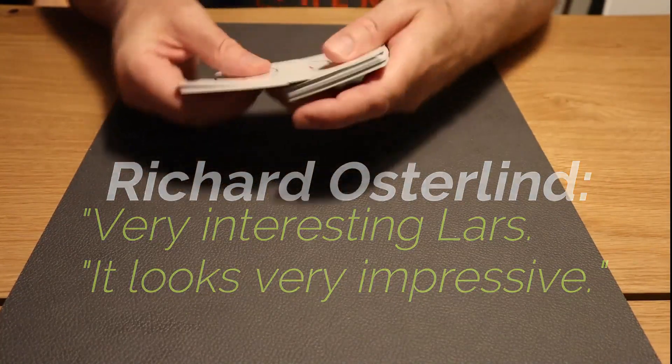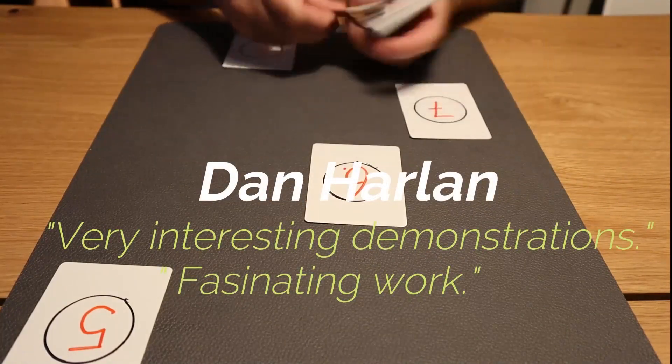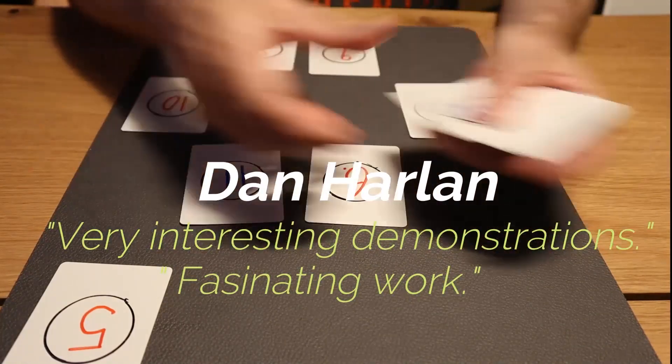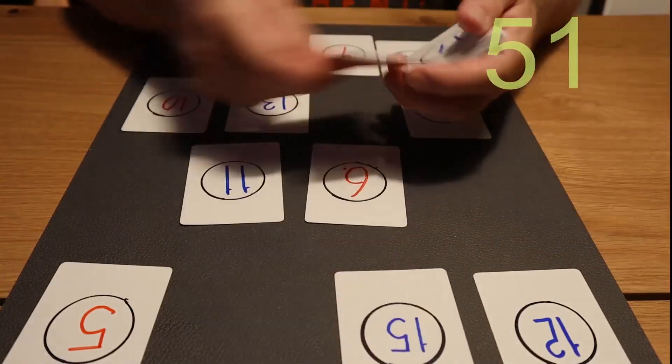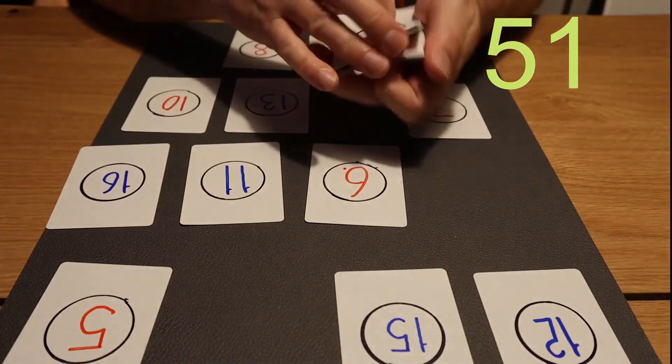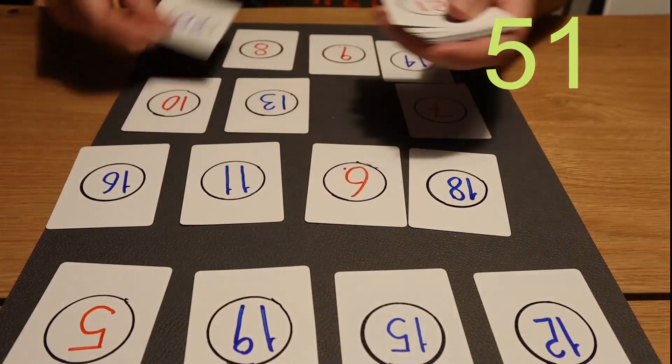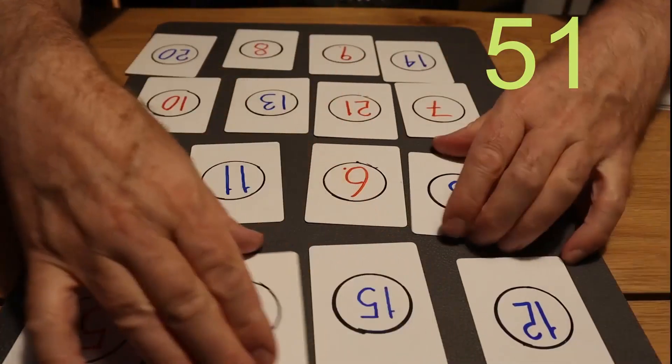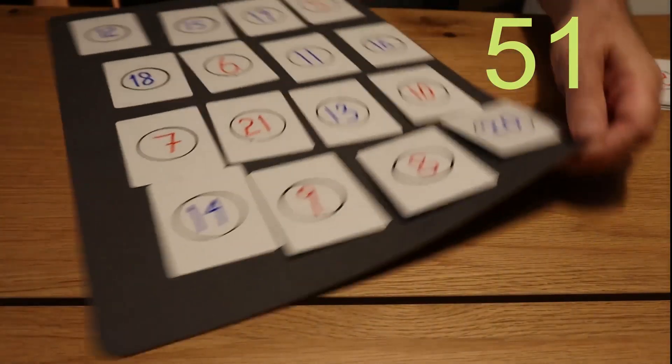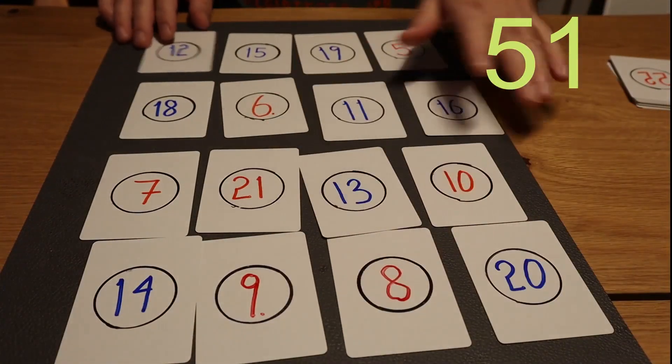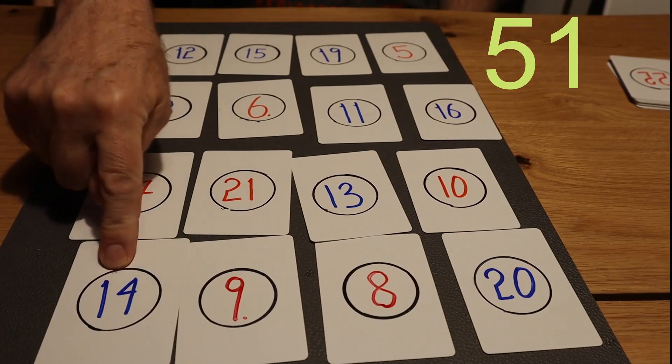51, okay. Let's try something here. If we add these cards together here, this is 30. 37 plus 14, that is 51. And if we add 15, 6, 21 and 9, that is also 51.